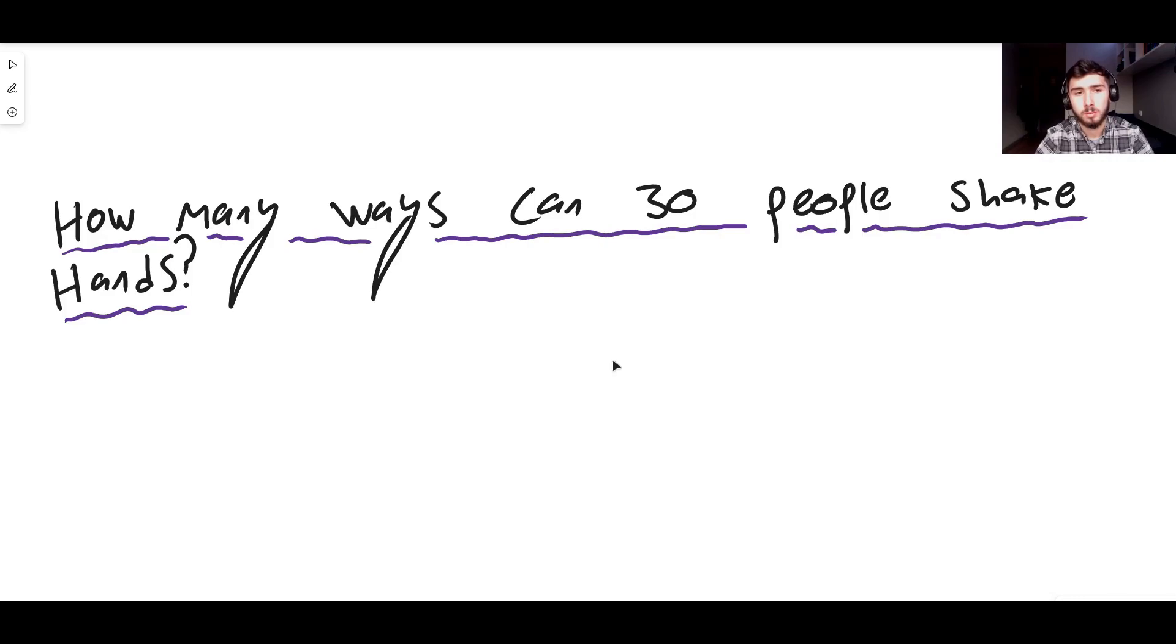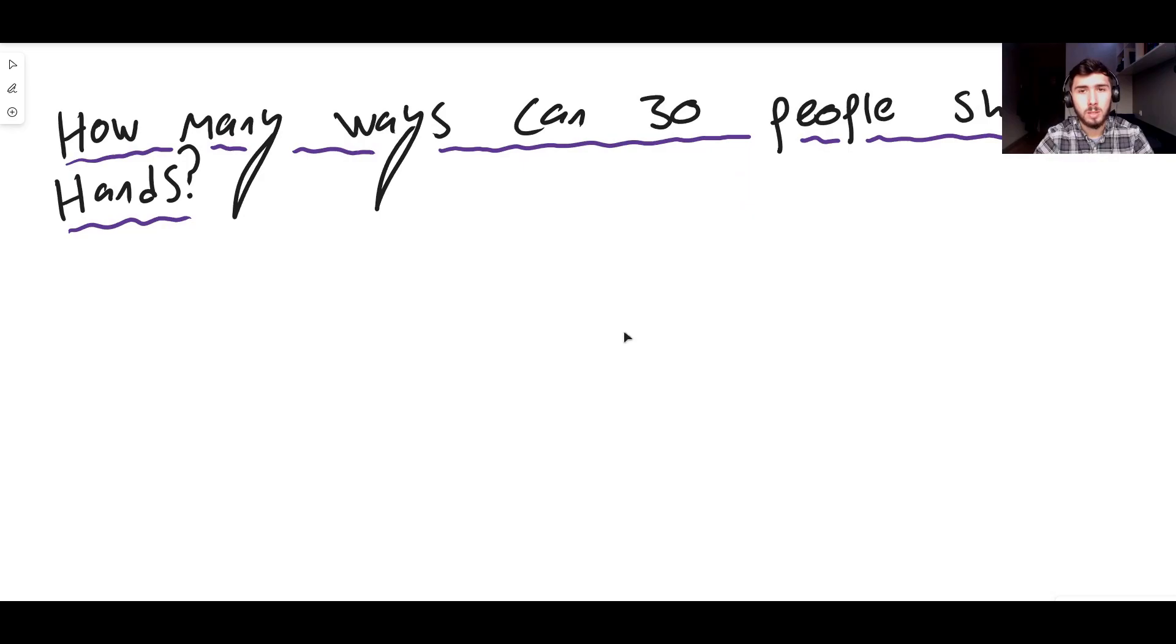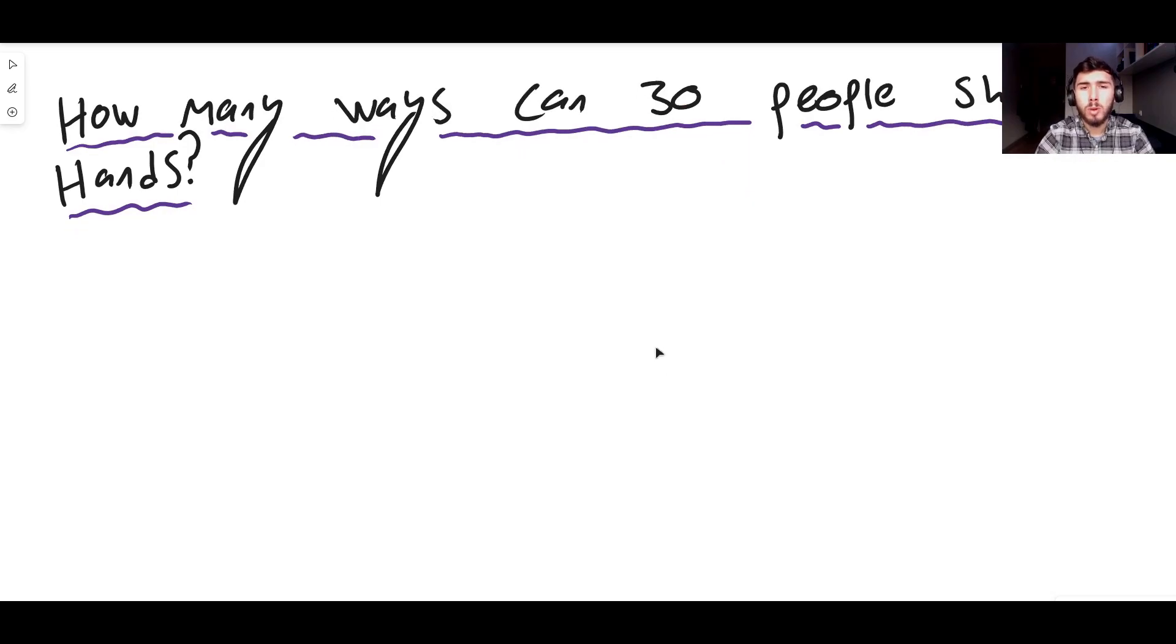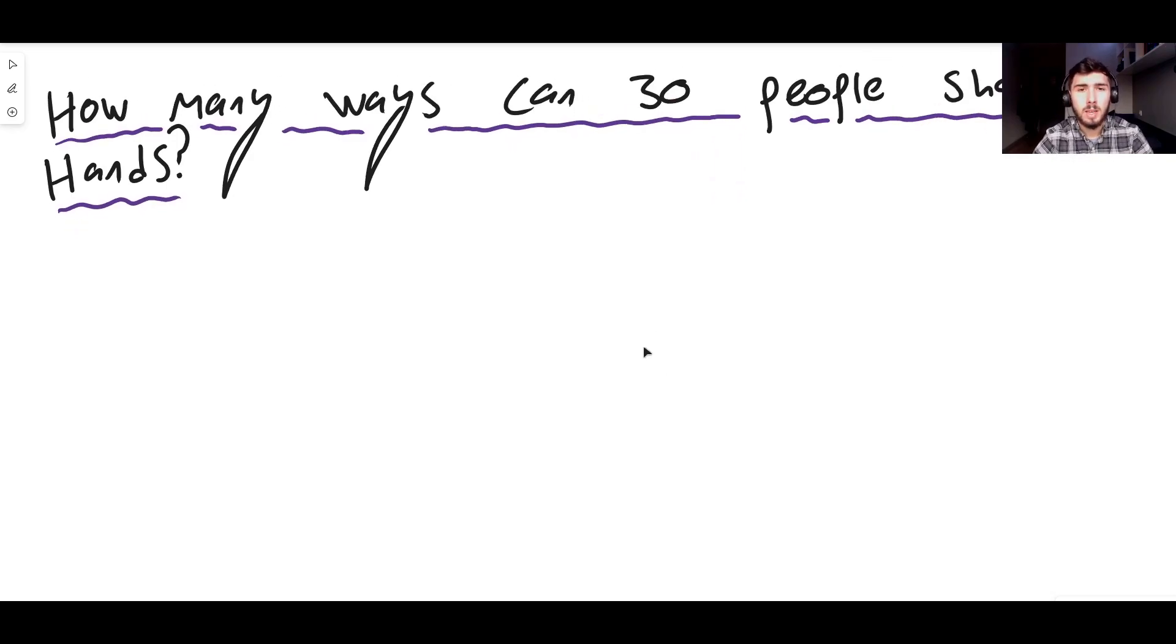So you know you take your first person, they have 29 handshakes don't they? The second person, hmm, is it 29 handshakes though? Because they've already shaken hands with the first person, they don't need to shake hands with that person again. You get the idea. So it's how many ways can 30 people shake hands? What this really means is how many, if you have 30 different objects, so in this case it's people, but if you have 30 different things how many ways can you arrange two of them? That's basically what the question is.